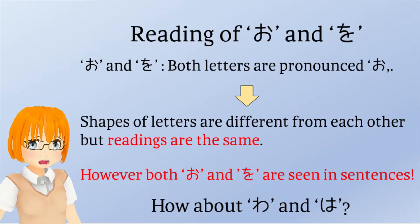At first, I am explaining these two letters. These letters have different shapes from each other, but they have the same reading: o. We can see both letters in Japanese sentences. What is the difference between these two letters? Moreover, as a similar case, there is a relation between the letters wa and special ha. How about them too?